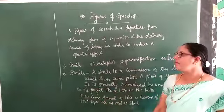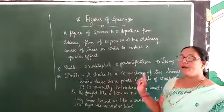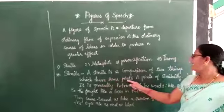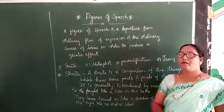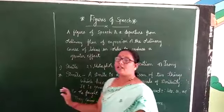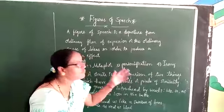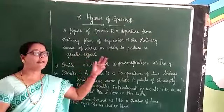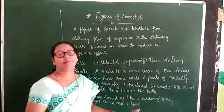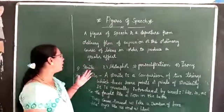What is the meaning of simile? A simile is a comparison of two things which have some point or points of similarity. Simile is spelled S-I-M-I-L-E. When two things share a point of similarity, that figure of speech is called a simile.